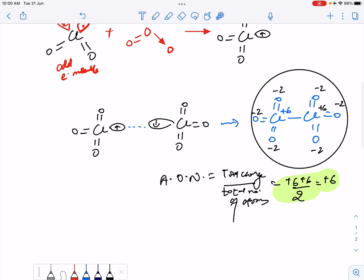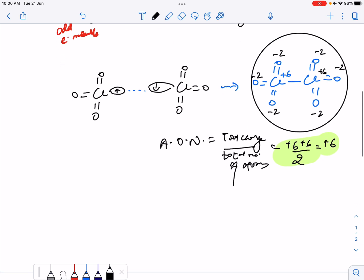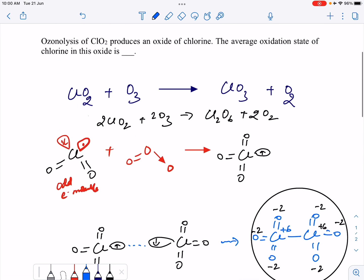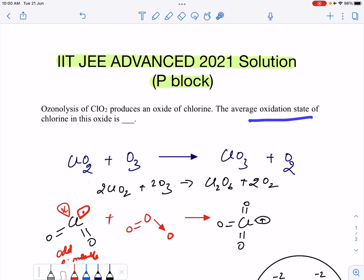We can also calculate this without the help of bonding. Let's say we have this compound Cl2O6. Let's consider the oxidation state of chlorine as x. So we have 2x plus 6 times oxygen with oxidation state of minus 2. Overall compound is neutral. We would get x as plus 6.